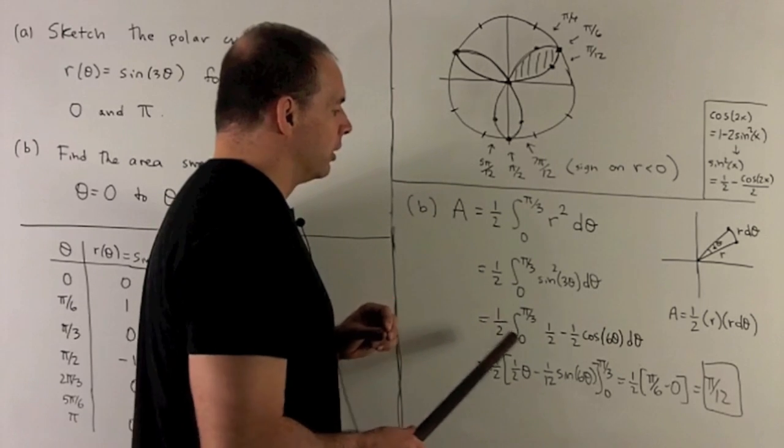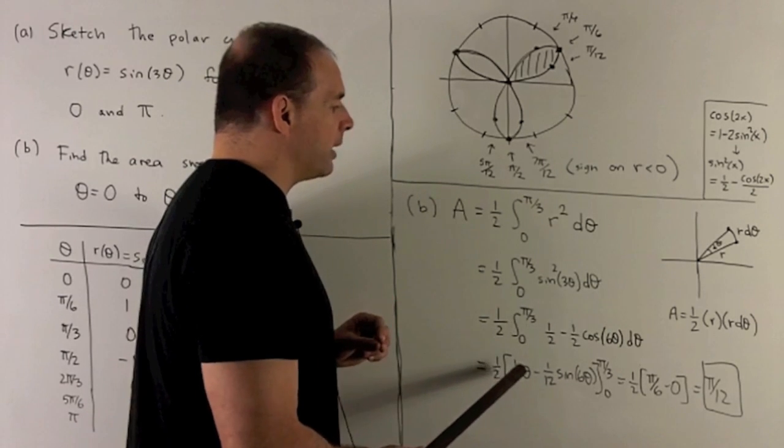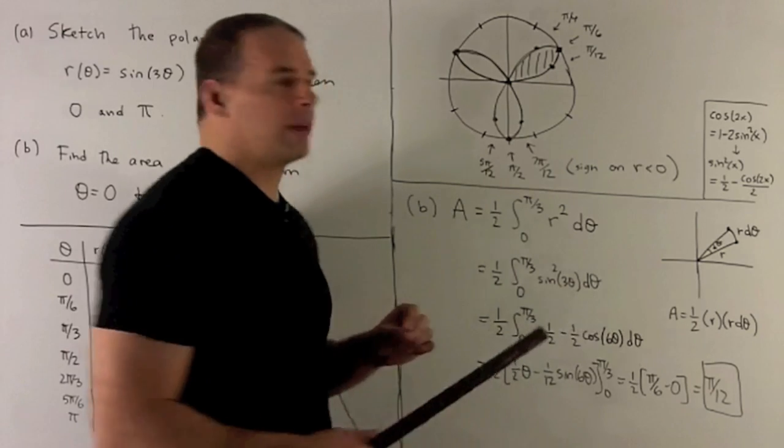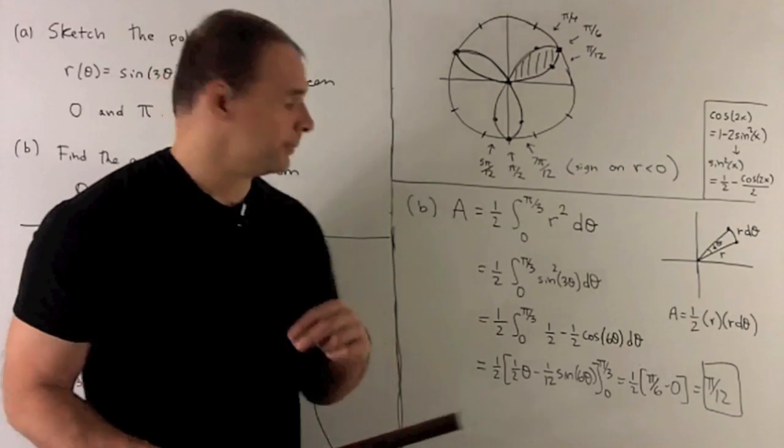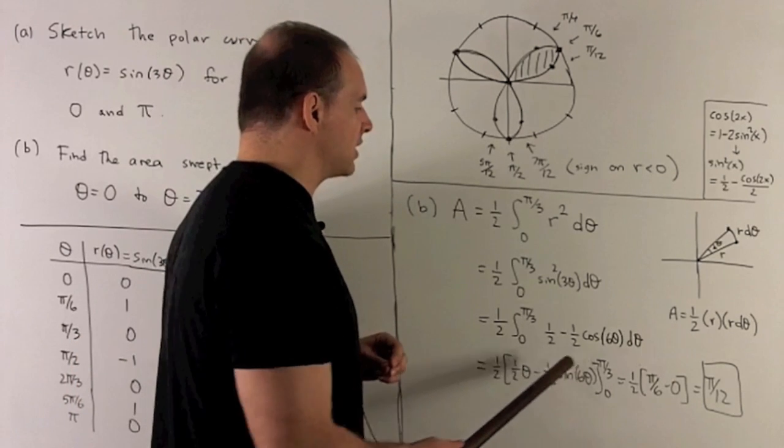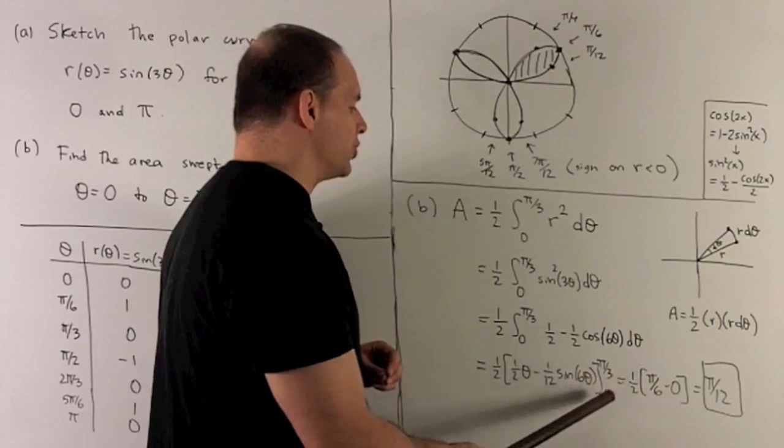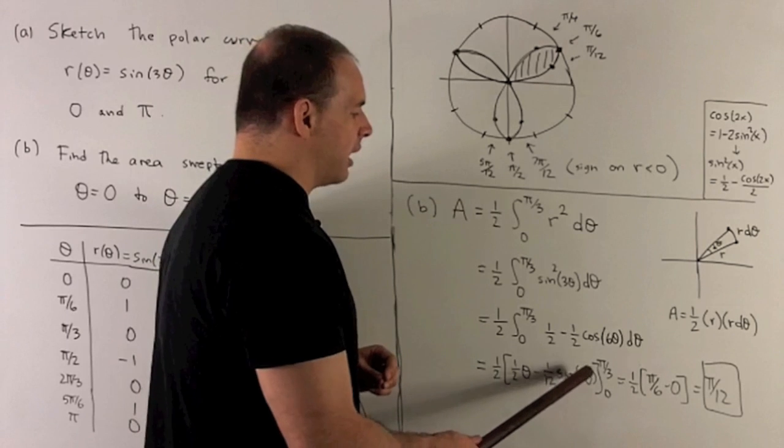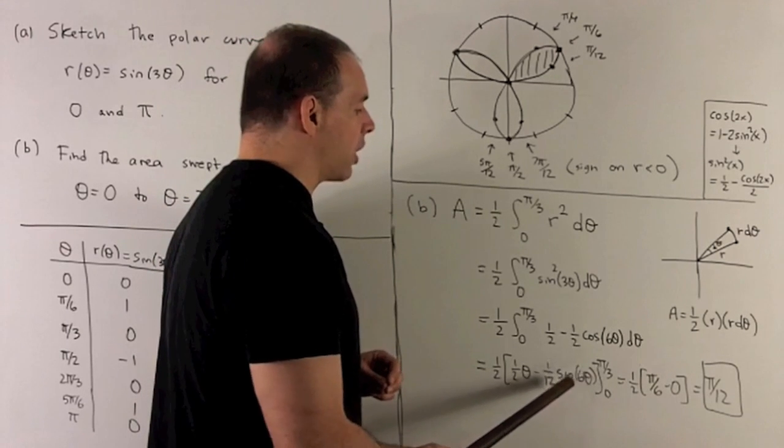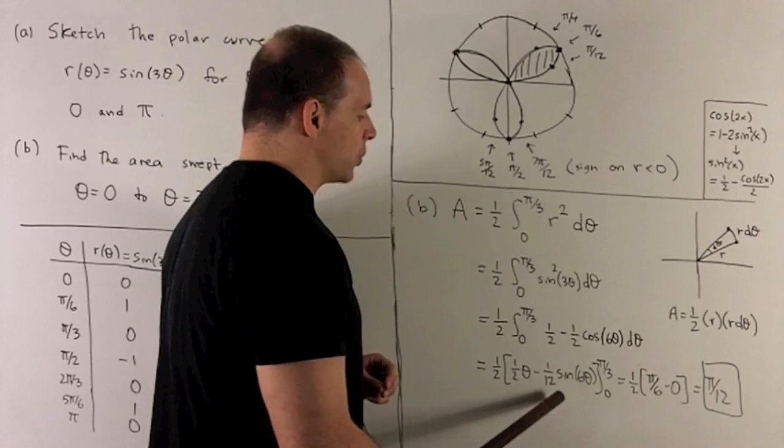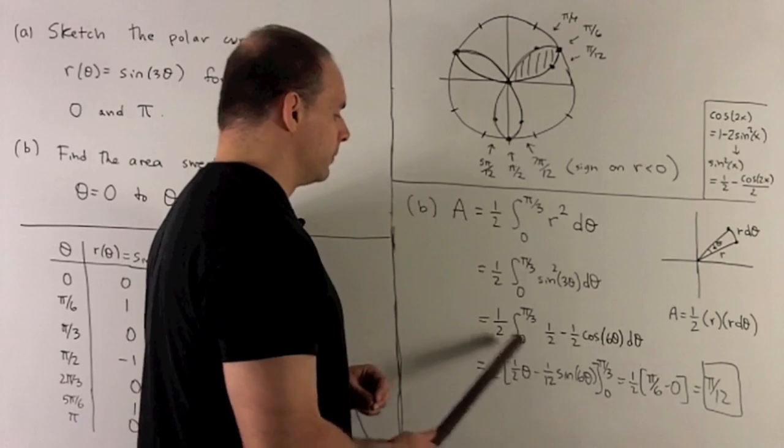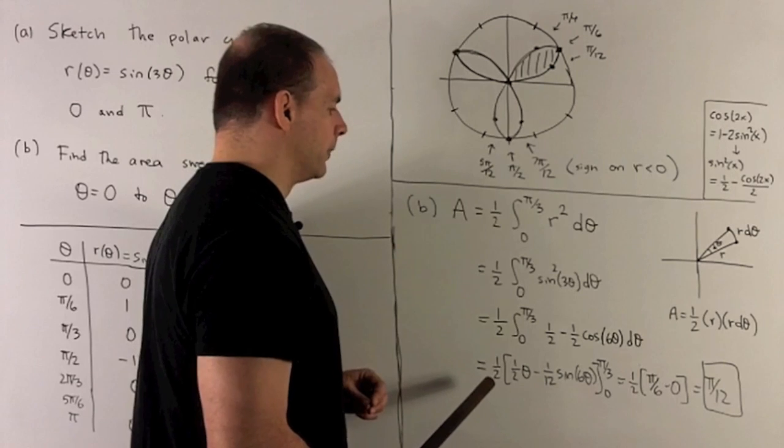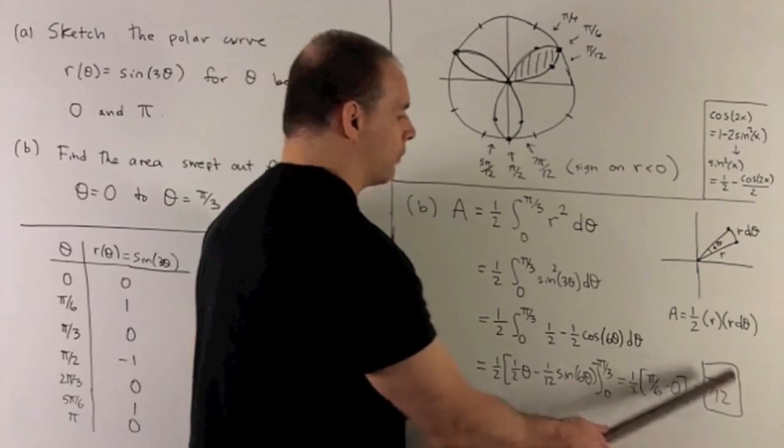So I want this definite integral now. The 1/2 goes to 1/2 θ. Cosine of 6θ, the derivative is sine, and then I divide by the 6. So that gives me 1/12 sin(6θ). We put in our 2π/3 and our zero. That's going to give me sin(2π) and sin(0). They both go to zero, so that goes away. I'm just going to have my θ = π/3, the only thing that contributes here. So I wind up with π/12.